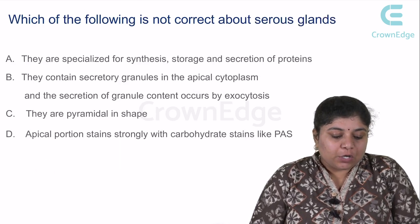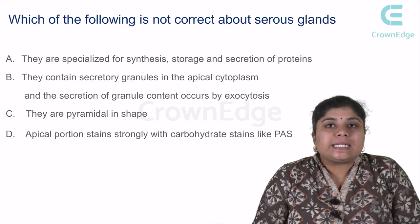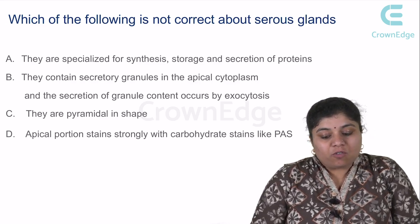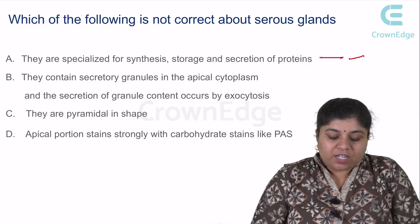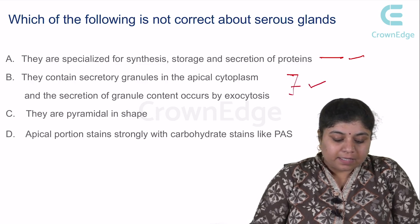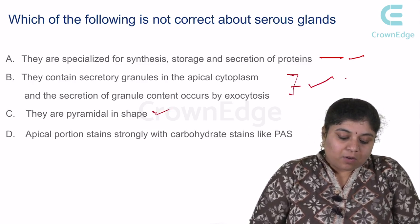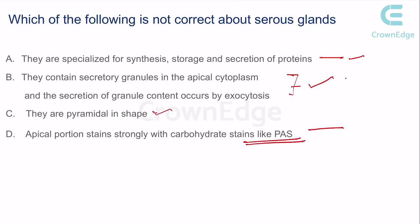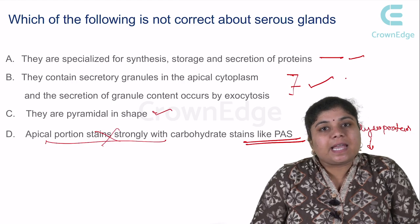One MCQ: which of the following is not correct about serous glands? Option A — they are specialized for synthesis, storage and secretion of proteins — correct. Option B — they contain secretory granules in the apical cytoplasm and secretion occurs by exocytosis — correct. Option C — they are pyramidal in shape — correct. Option D — the apical portion stains strongly with carbohydrate stains like PAS. This is wrong, because serous granules stain with toluidine blue, not PAS. The answer is option D.